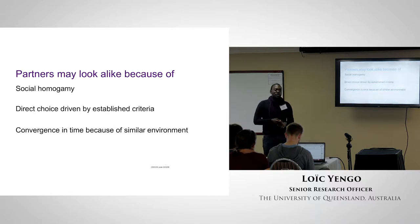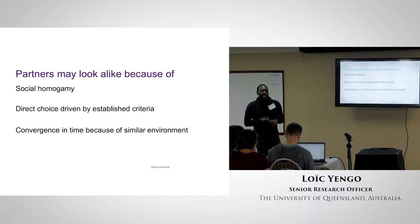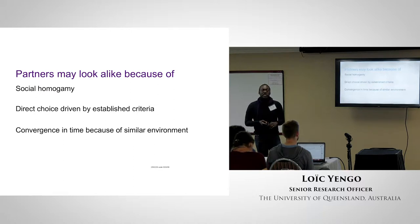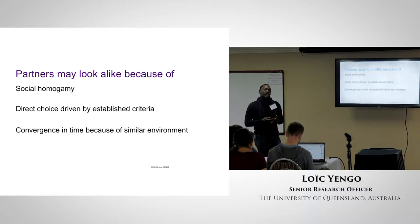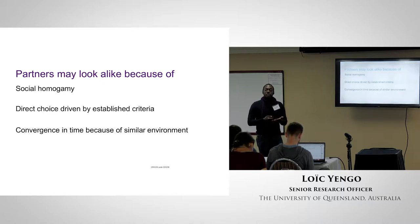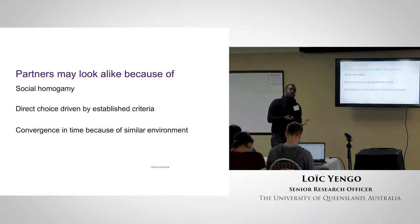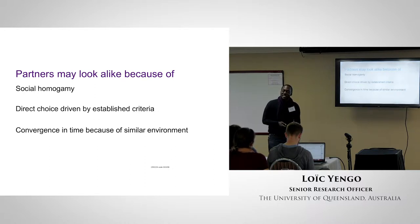So why do partners look alike? It's not a simple question, but here are three well-accepted explanations. The first is social homogamy, which basically refers to the fact that you're more likely to find your partner within the social circles that you attend. For example, if you're into music, you may more likely find your partner at a concert. If you're into sport, you may most likely find your partner at a gym.